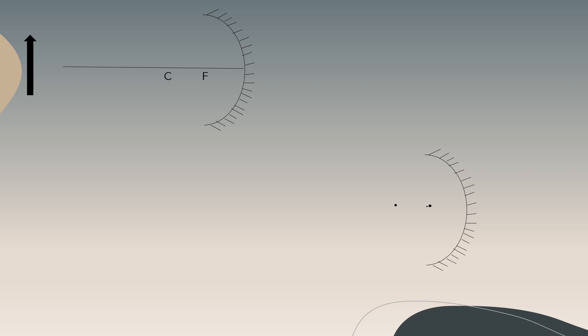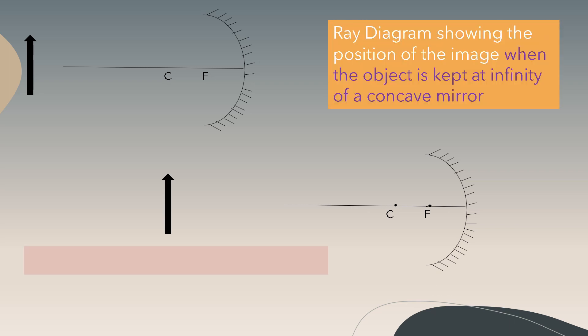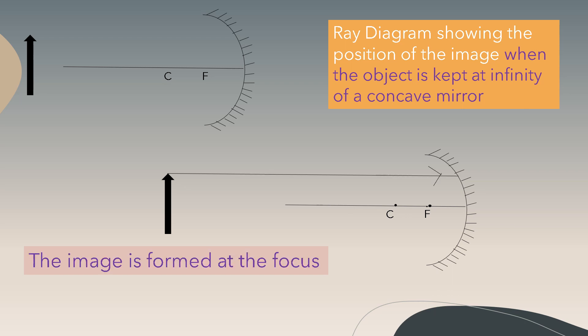Now the ray diagram when the object is kept at infinity. When the object is at infinity, the rays parallel to the principal axis pass through the focus. So the point of intersection is at the focus, and the image is also formed at the focus.